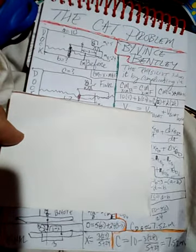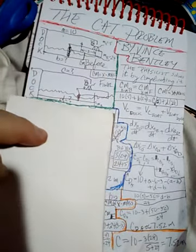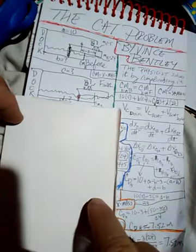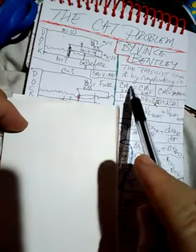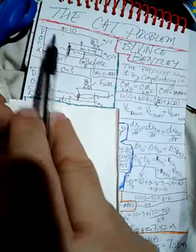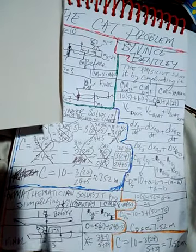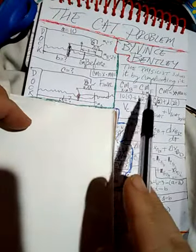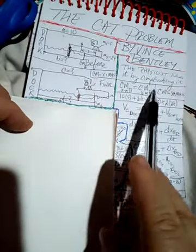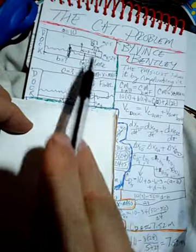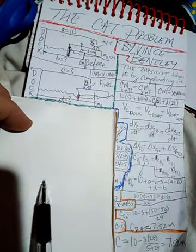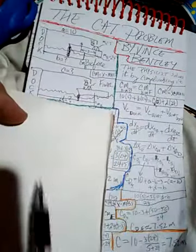The mathematician got 7.52 meters — the same as the engineer, which is reassuring. Now let's bring in the physicist. Physicists don't mind introducing many variables because they can use computers and calculators. Mathematicians use symmetry to keep it to one variable, but physicists will introduce as many variables as needed.